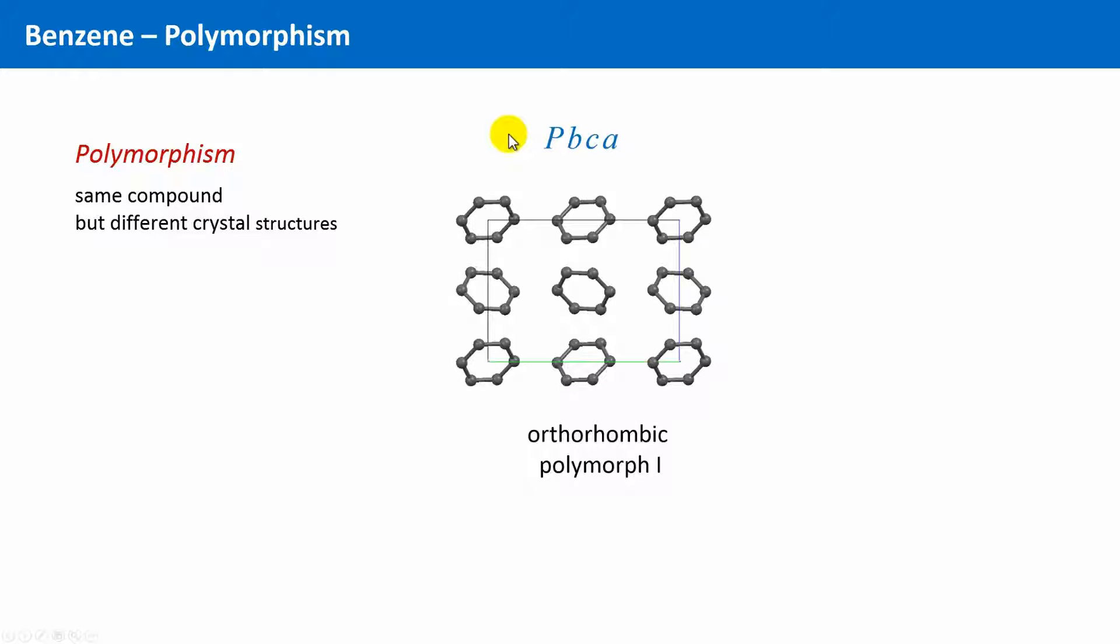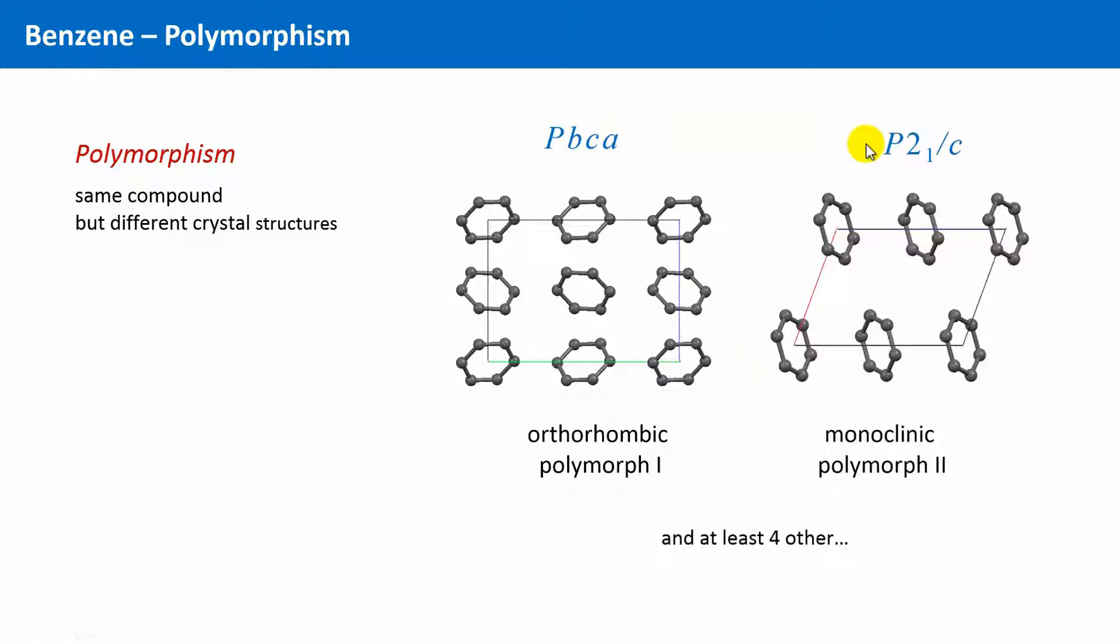Benzene crystallizes not only in the space group PBCA, which we have just seen, but under higher pressure, the crystal will undergo a phase transition towards a structure with the space group P21 over C. And there are at least four more other known polymorphs.